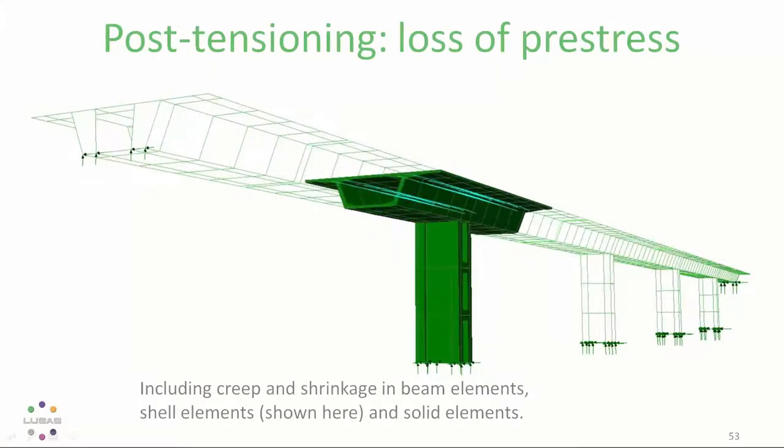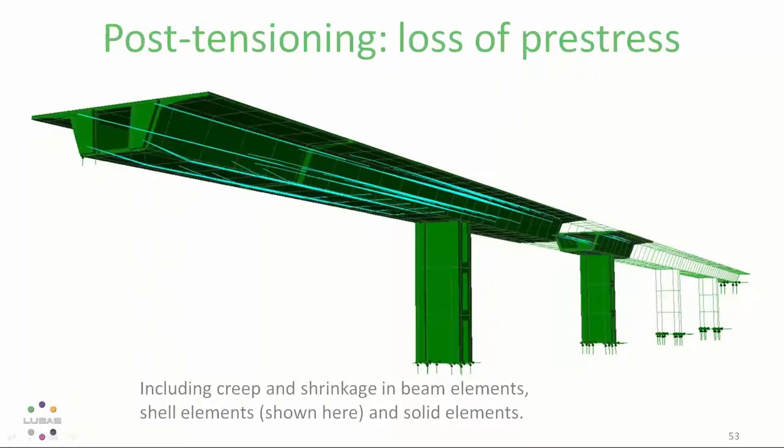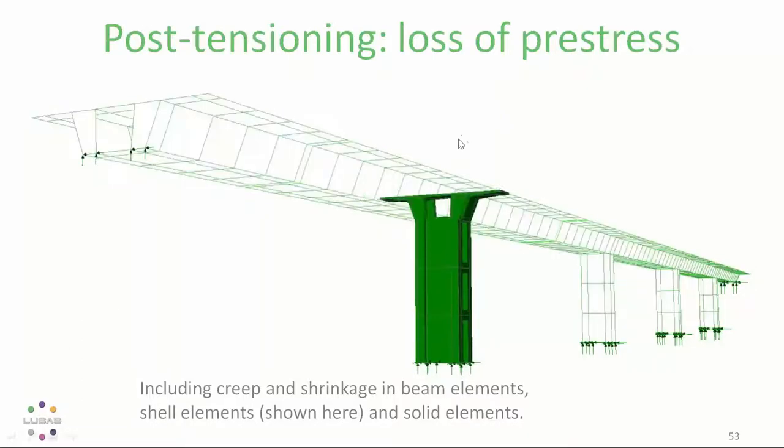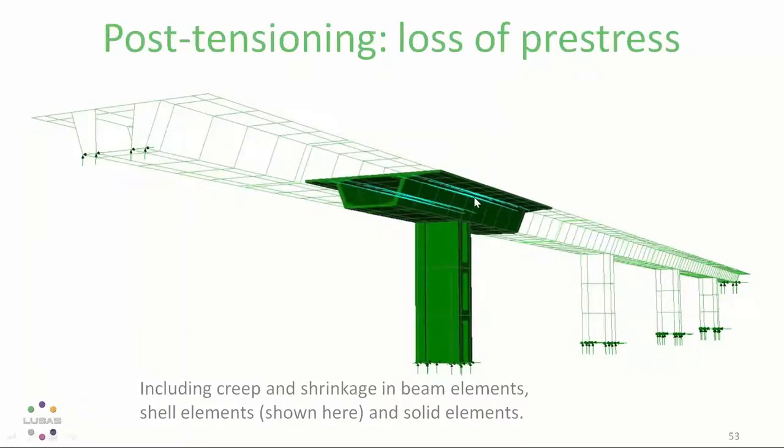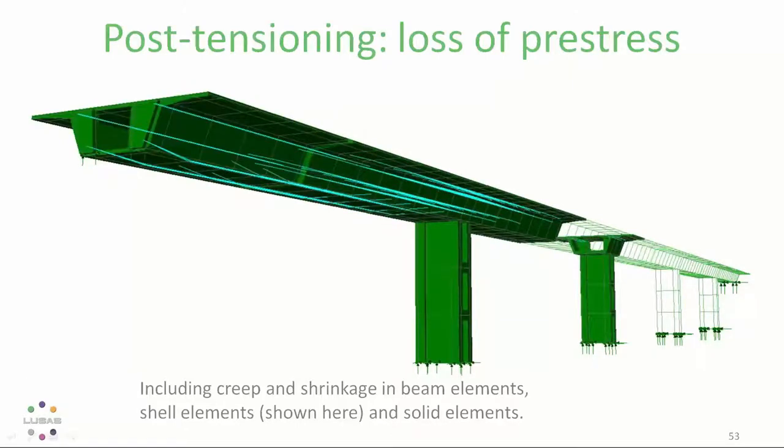LUSAS also has a range of tools for post-tension structures, including the calculation of tendon losses and creep and shrinkage in beam elements and in shell elements, as you can see here, and solid elements. So these haven't changed particularly in version 19, so they're not really part of this presentation, and you can find out more on our website. But they do deal with creep and shrinkage, and as you can see, even you can see the tendon profiles where they are with these blue lines. And shells are obviously much better for transverse post-tensioning, which you don't get with beam elements. And a lot of other software only does this in beam elements.